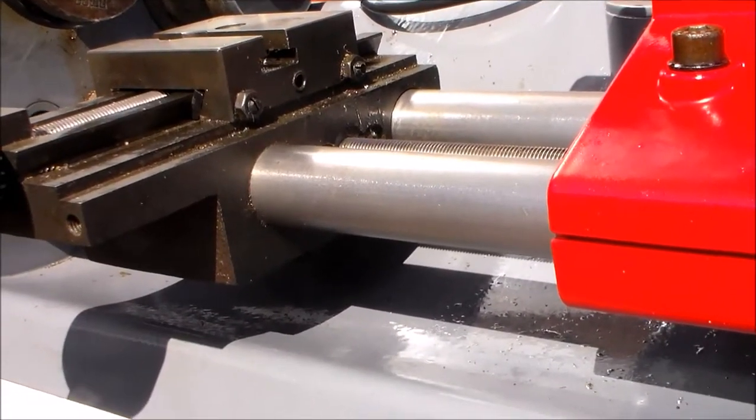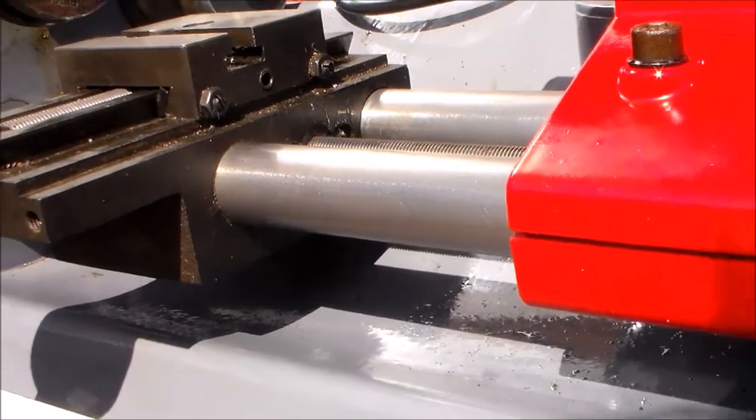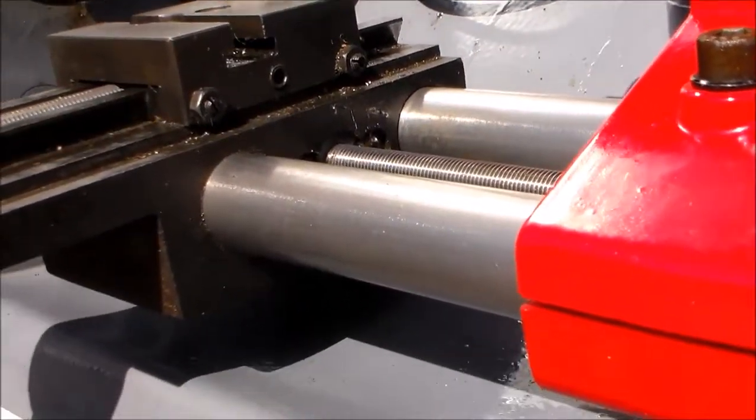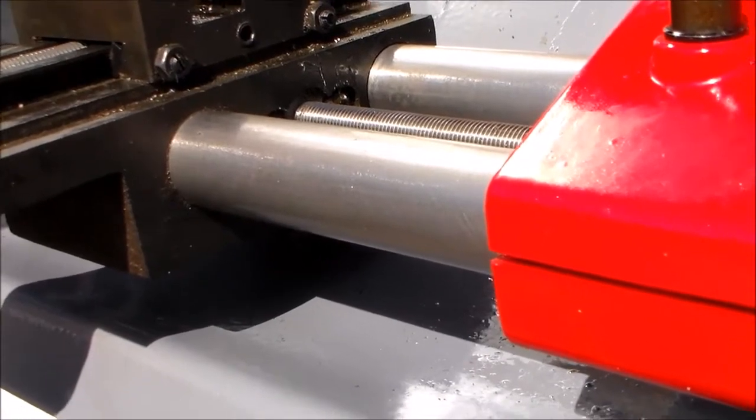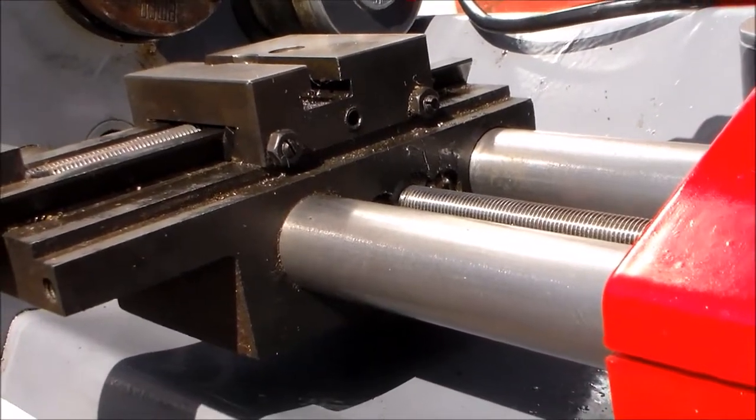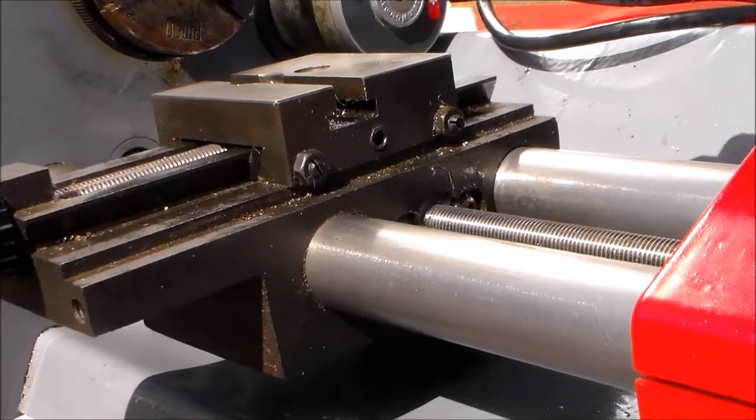Well, the cross slide isn't split as the tailstock is. It appears to be machined from one solid piece of steel. It could be cast.